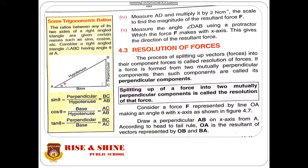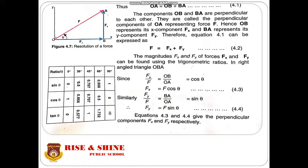Consider a force F represented by line OA making angle theta with the x-axis, as shown in figure 4.7. Draw a perpendicular AB on the x-axis from point A. According to the head-to-tail rule, OA is the resultant of vectors OB and BA. Here OA represents force F, OB represents the horizontal component Fx, and BA represents the vertical component Fy. Therefore: F = Fx + Fy (equation 4.2).